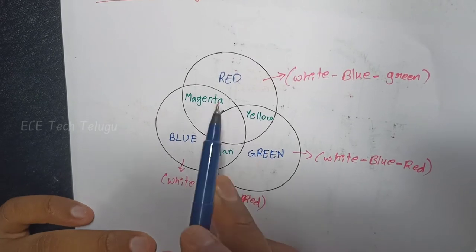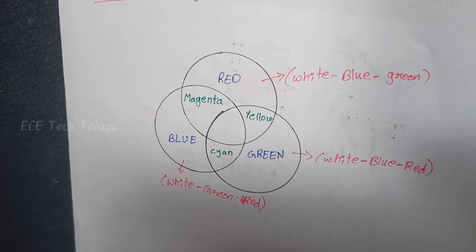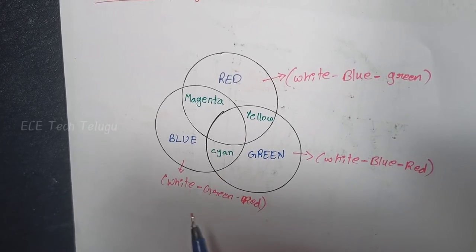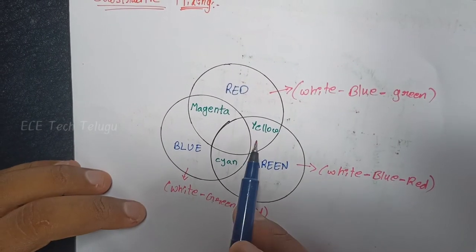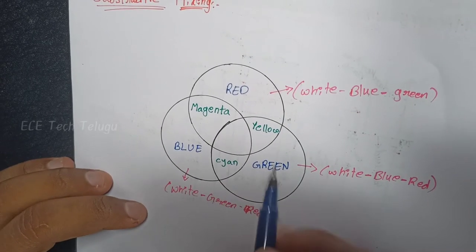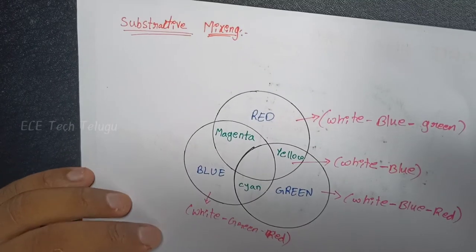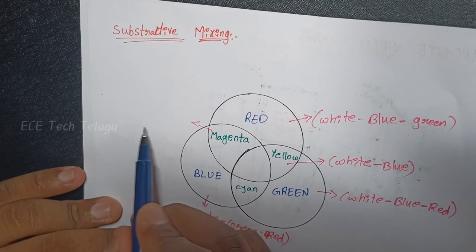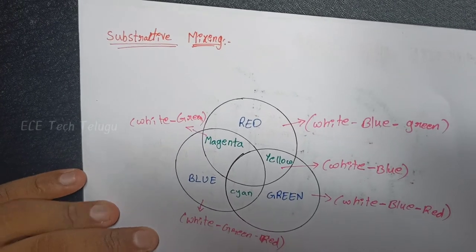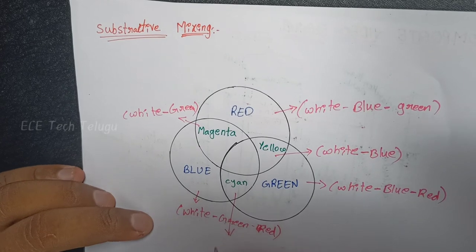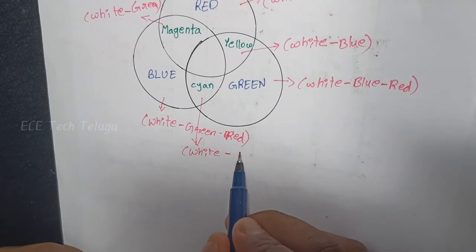Primary colors are Red, Green, and Blue. The complementary colors are three: Yellow, Magenta, and Cyan. Yellow color = white minus blue. Magenta = white minus green. Cyan = white minus red.